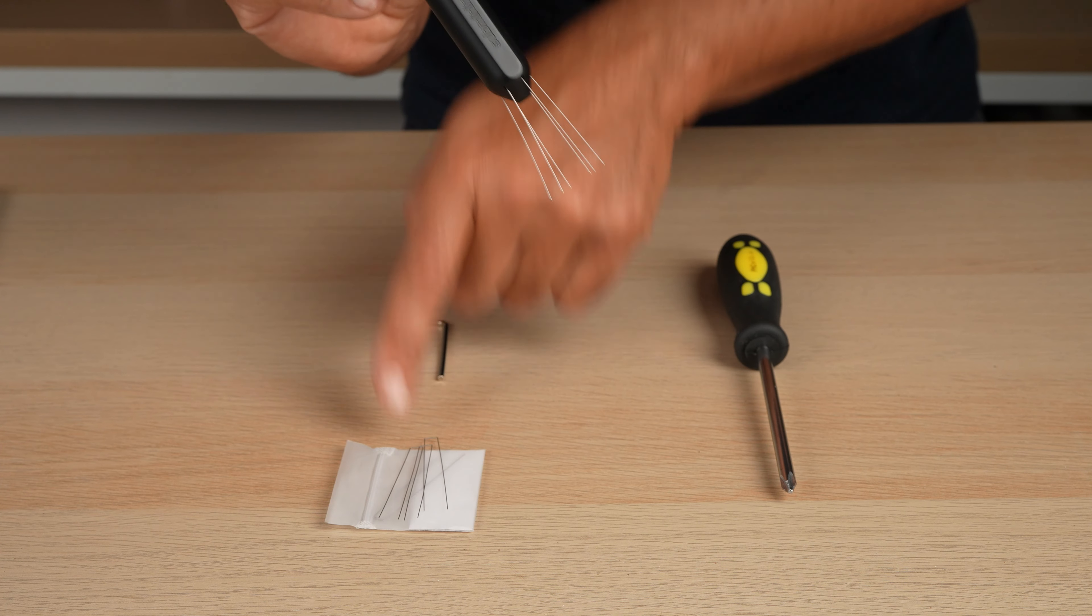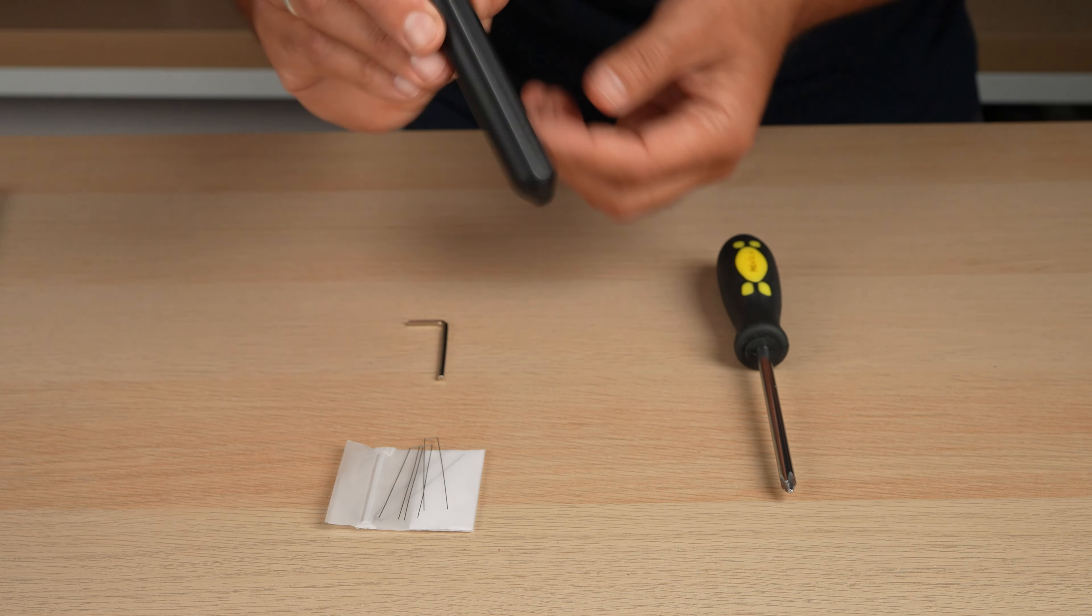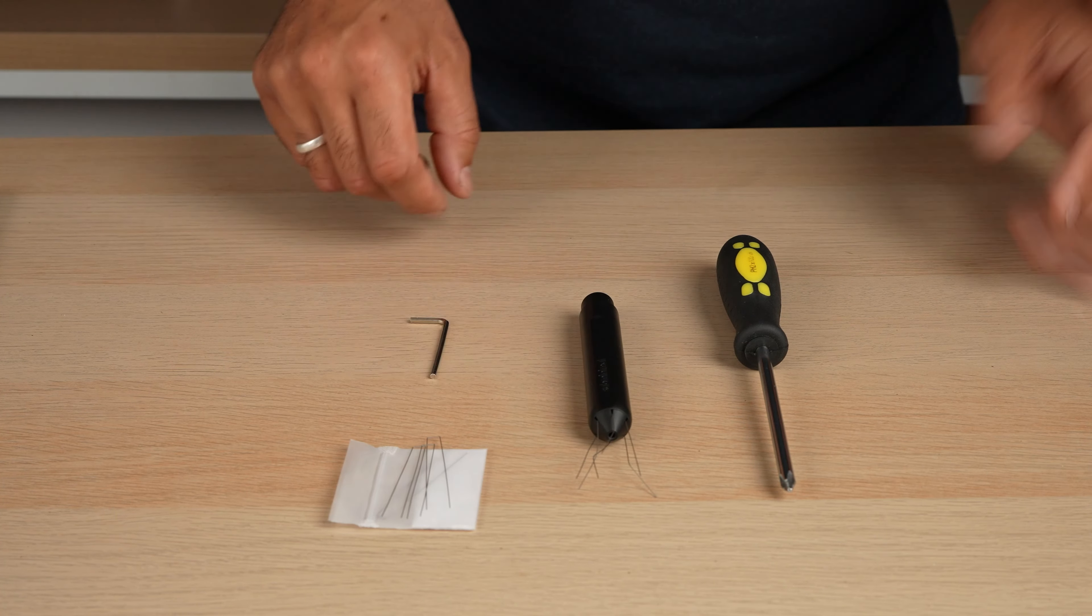To get the best result from a WDT you need to use fine needles and sometimes those fine needles get bent. Today I'm going to show you how to replace the needles in the Flick WDT.